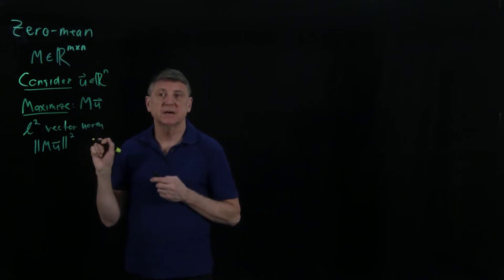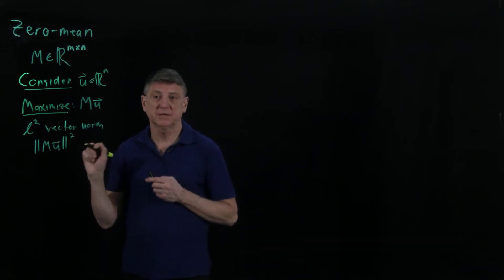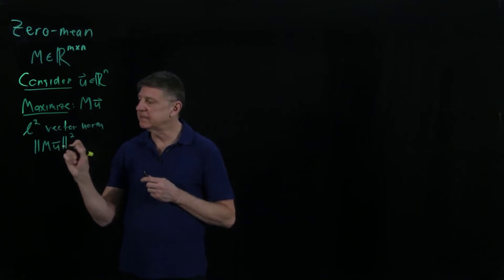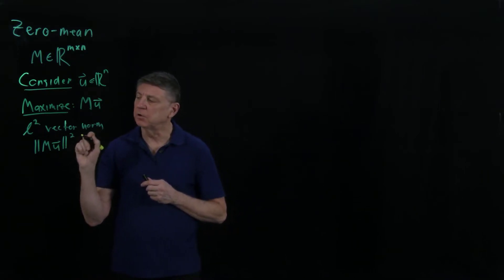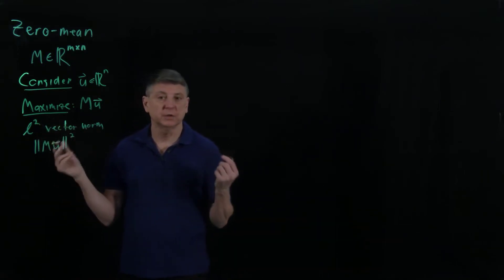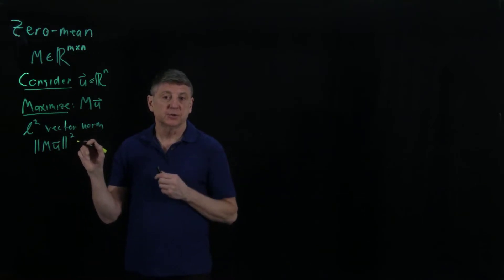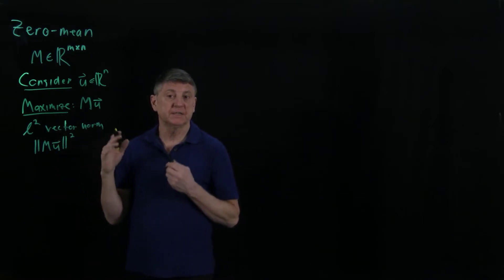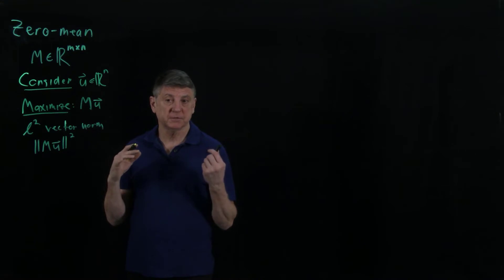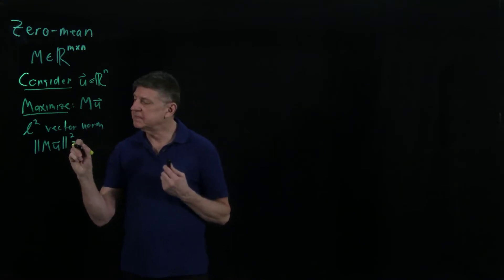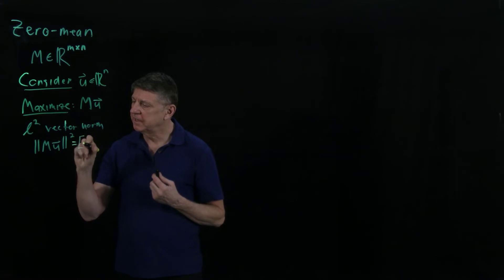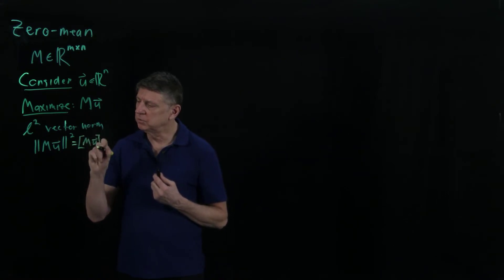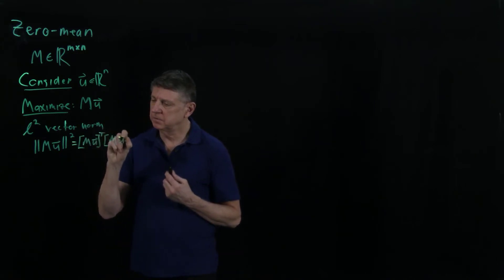This has a very simple formulation. How could we write this? Let's recall that for the L2 or Euclidean norm, the squared norm of a vector is the vector transposed times the vector. So this has to equal this inner part: M times U transposed times MU.